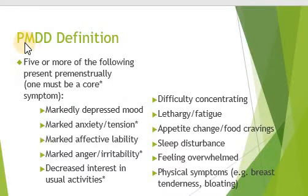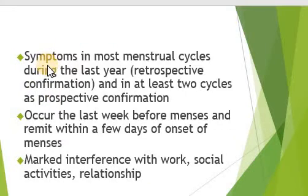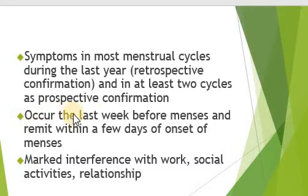To summarize PMDD, five or more of the following symptoms must be present: marked depression, marked anxiety, marked affective lability, marked irritability, decreased interest in usual activities, difficulty in concentration, lethargy, change in appetite, disturbance of sleep, and physical symptoms like breast tenderness and bloating. These symptoms are present in most menstrual cycles during one year — or in case of PMS, at least two cycles — occurring in the last week before menses, continuing up to a few days after onset, with marked interference with work, social activities, and relationships.